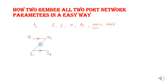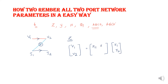How to write this for the Z parameter? First, write V1 and V2 on the left-hand side of the equation, then write the Z parameters, followed by I1 and I2. Put the Z parameter values: Z11, Z12, Z21, Z22. The equations are: V1 = Z11·I1 + Z12·I2, and V2 = Z21·I1 + Z22·I2.